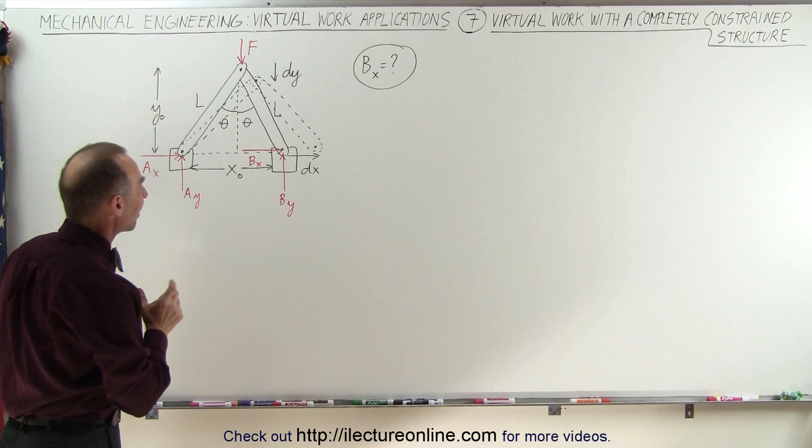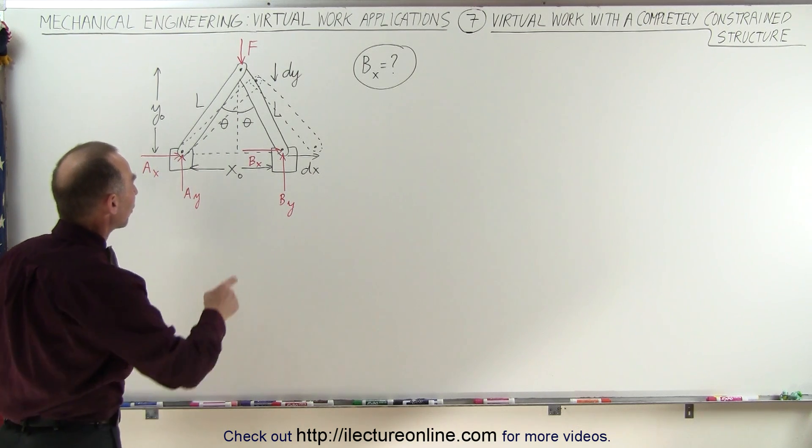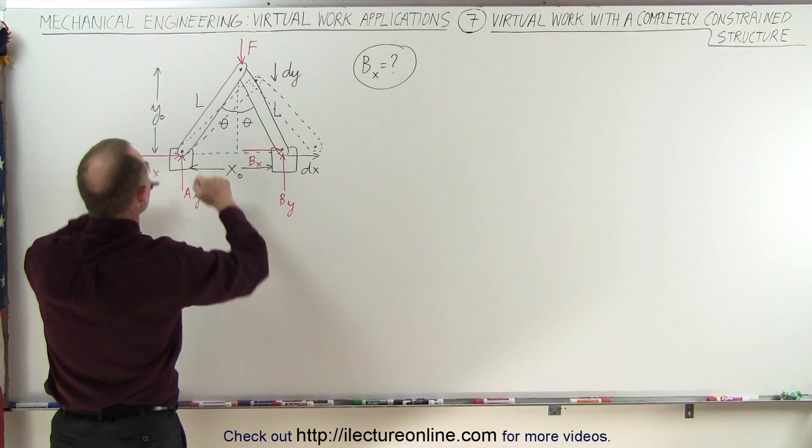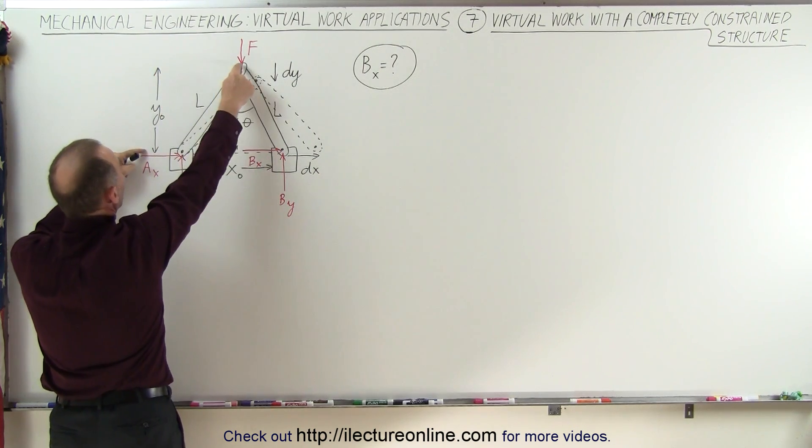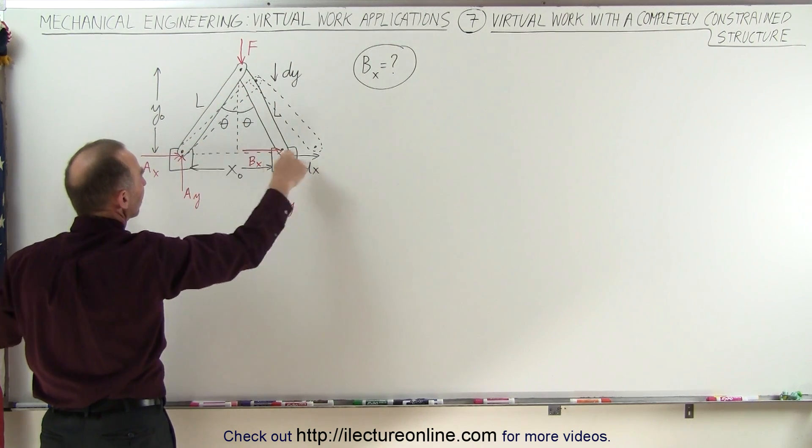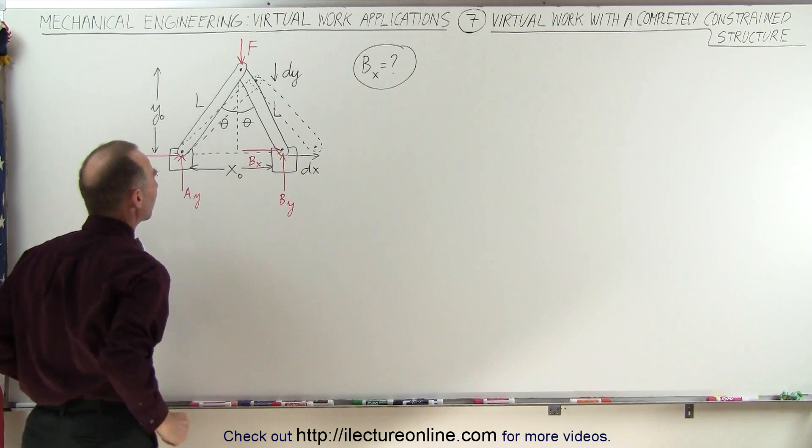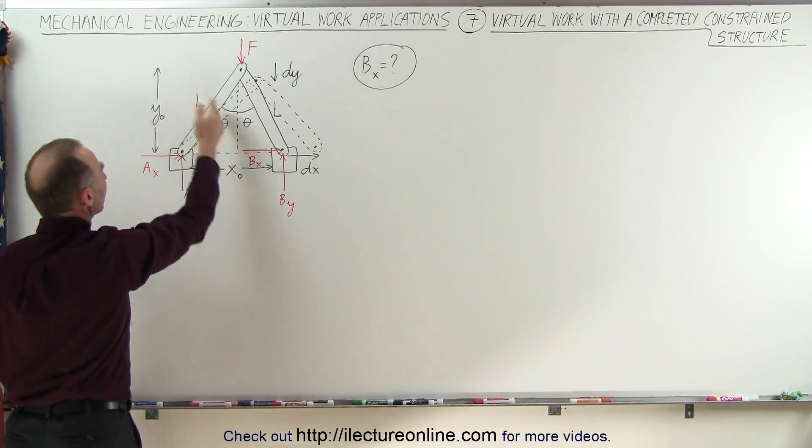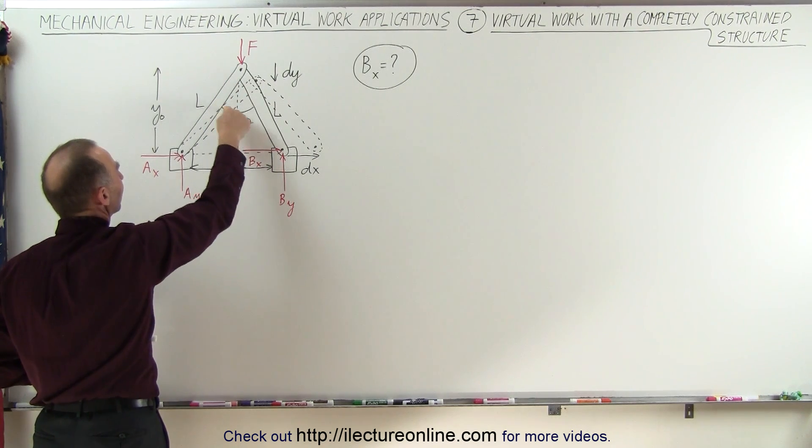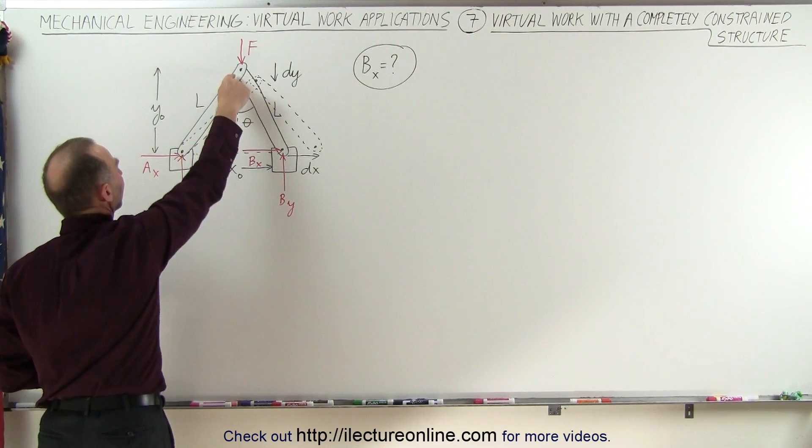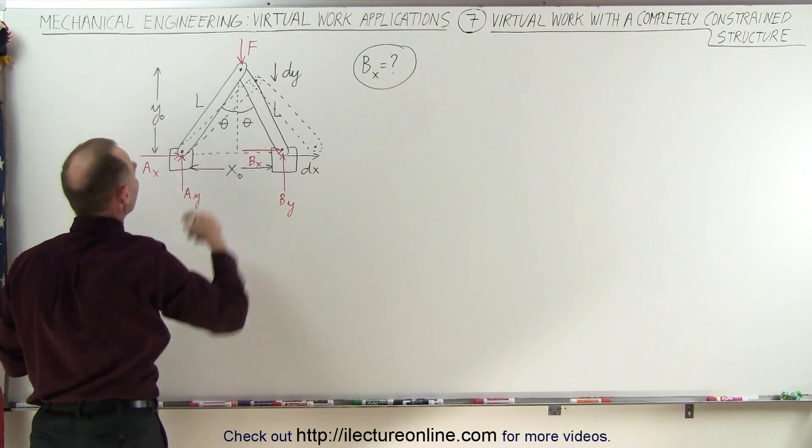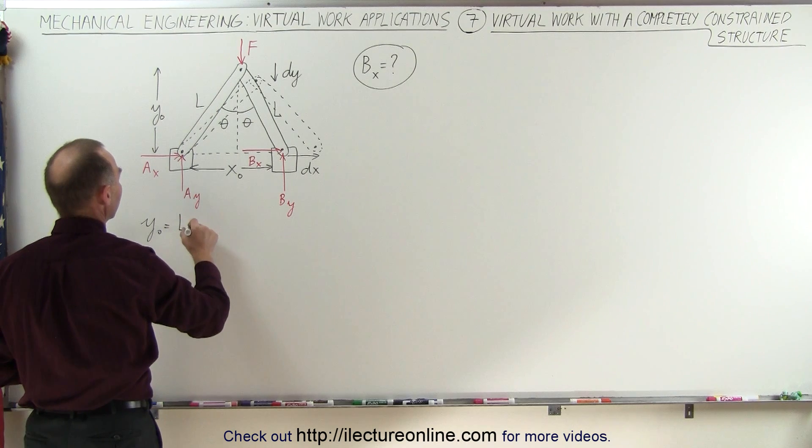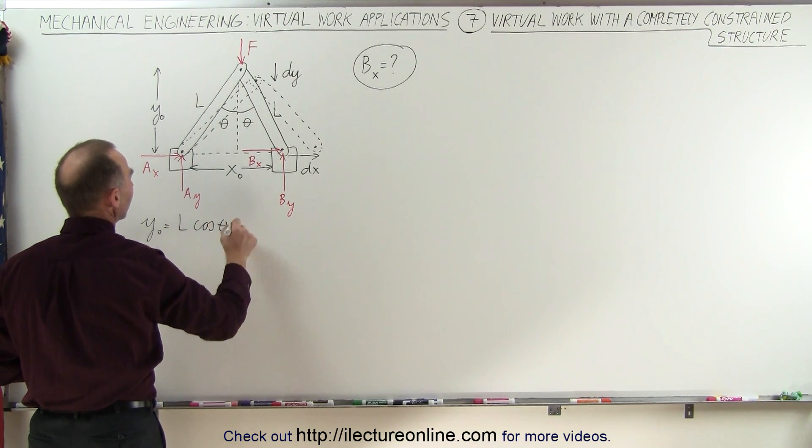Things are a little bit different, so we have to be careful. But again, we're going to define the distance X between the two attached points at the bottom here and the distance Y between where the force is acting and where the pins of attachments are at the bottom. Y is this vertical distance. If this is the angle of theta here, that would be L times the cosine of theta. So Y sub naught is equal to L times the cosine of theta.